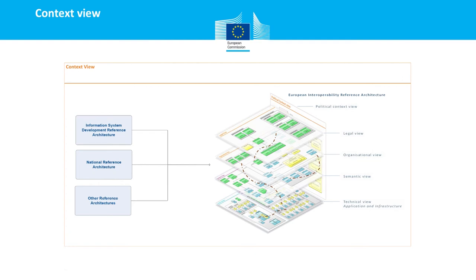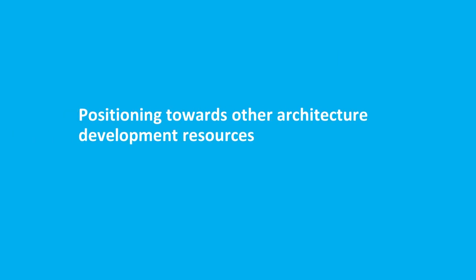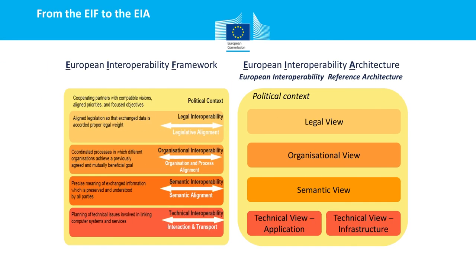This slide presents the relationship between existing architectures and the European Interoperability Reference Architecture. An information systems development reference architecture or a national reference architecture can be seen as an instance or specialization of the EIRA. The levels of interoperability in the European Interoperability Framework are mapped one-to-one to the views of the EIRA: legal, organizational, semantic, and technical interoperability map to the corresponding legal, organizational, semantic, and technical views — with the technical view divided into two sub-views in our reference architecture.